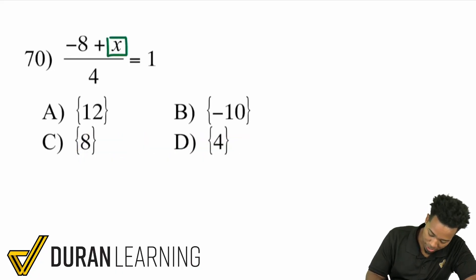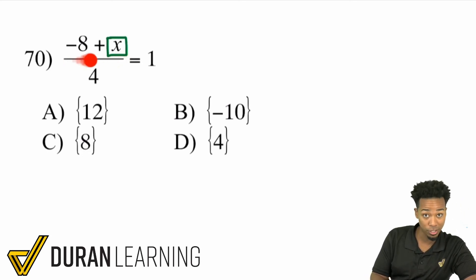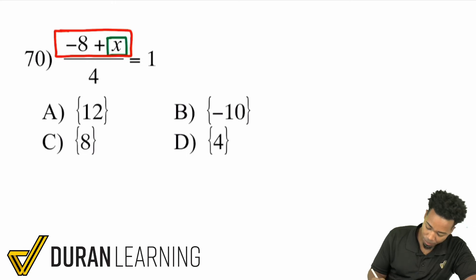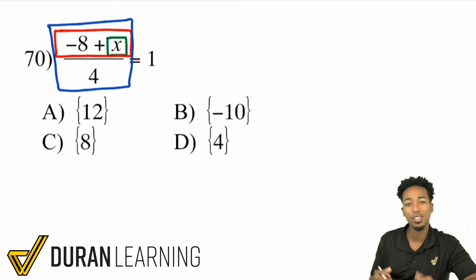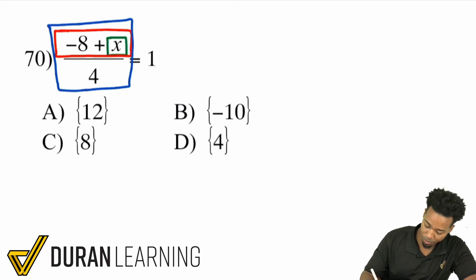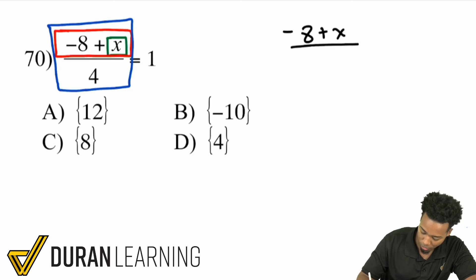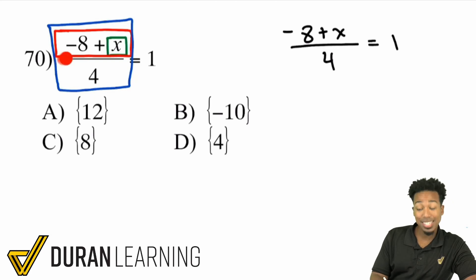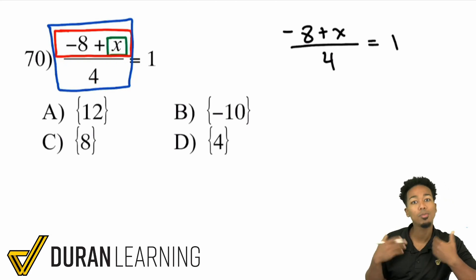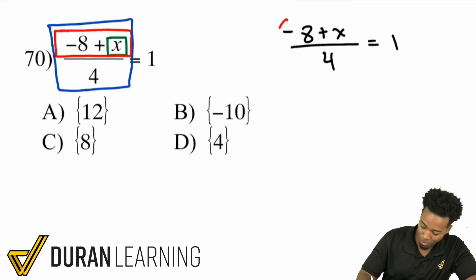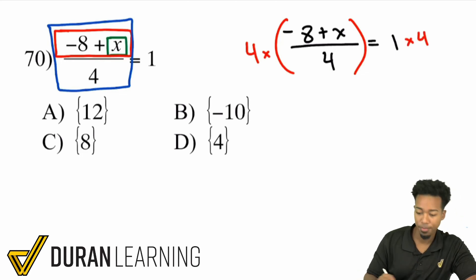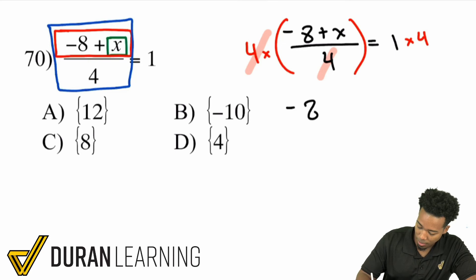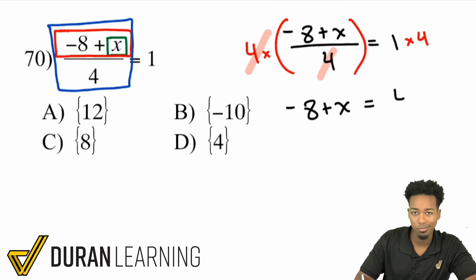I'm trying to get X by itself. In the numerator of the entire fraction, we have negative 8 being added to X, and then the entirety of negative 8 plus X is being divided by 4. So observing these steps: the last step was dividing everything by 4, so our first step is to multiply everything by 4 — opposite operations. Multiplying by 4 cancels out the division, leaving negative 8 plus X equals 1 times 4, which is 4.